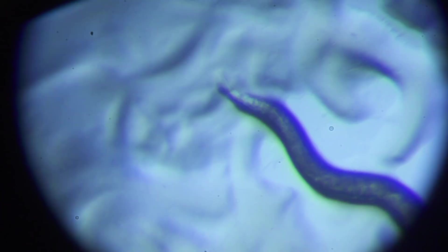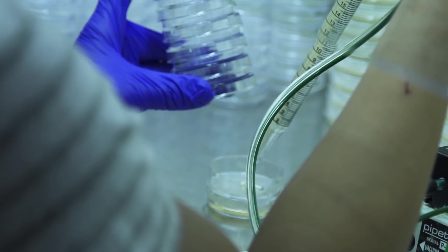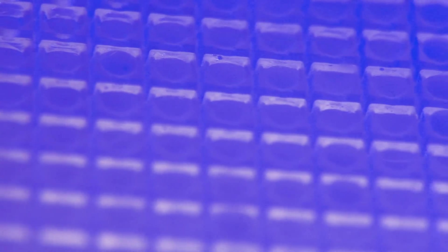So the worms eat bacteria, and we can engineer the bacteria such that in each well, the bacteria turn off a specific gene in each worm. And in that way, we can see what the effect of turning off that gene is on the animal's lifespan and their health during the aging process.